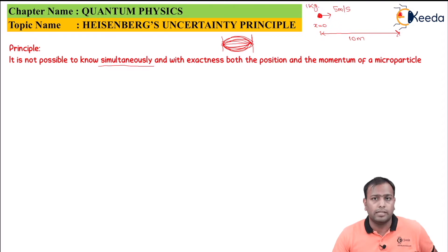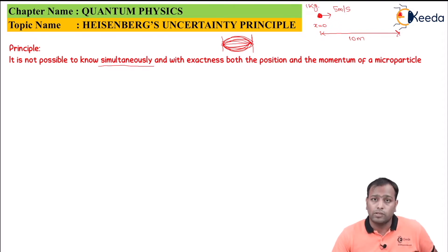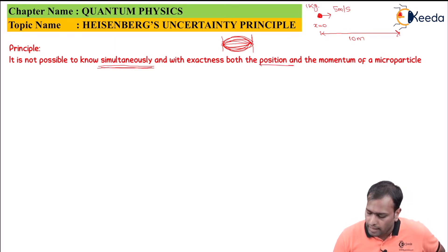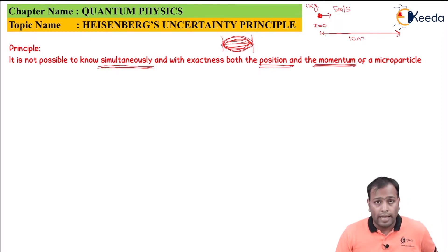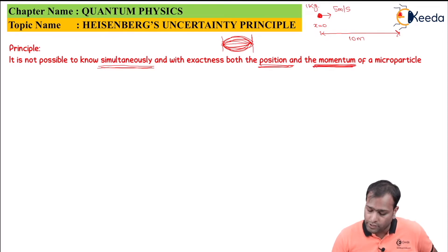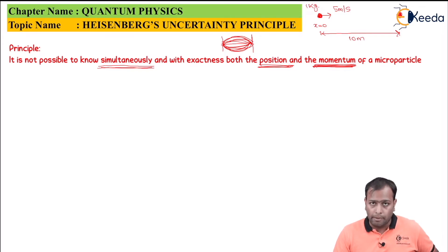If there is uncertainty in its future prediction, you cannot predict the velocity. Heisenberg was the first scientist to discover this and state this law, thereby stating that it is impossible to simultaneously know both the position and the momentum. If you try to accurately find the position, you will not be able to find the momentum; whereas if you want to find the exact momentum, you lose accuracy in position. Finding both things simultaneously for subatomic particles is impossible.